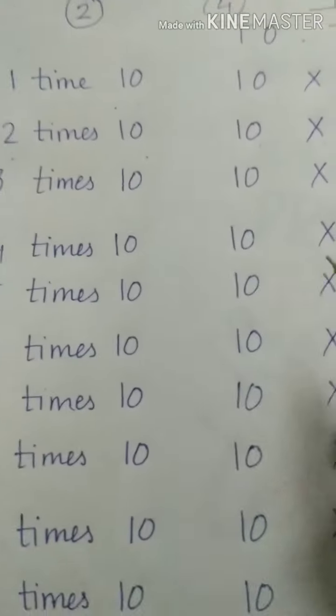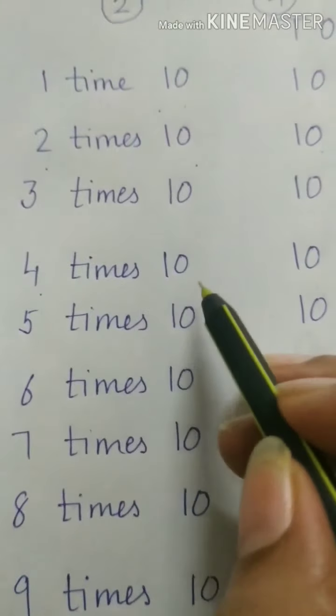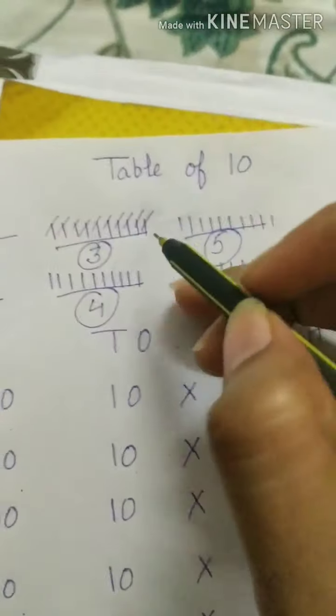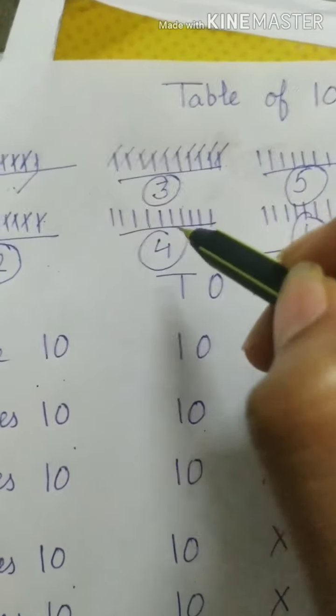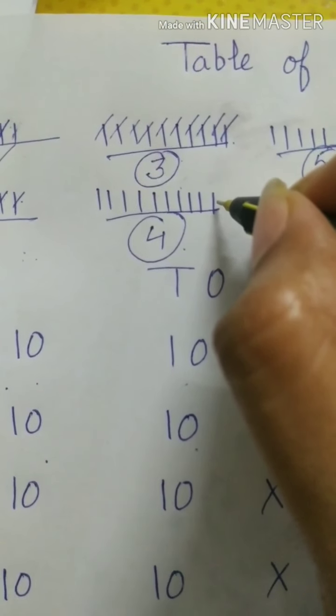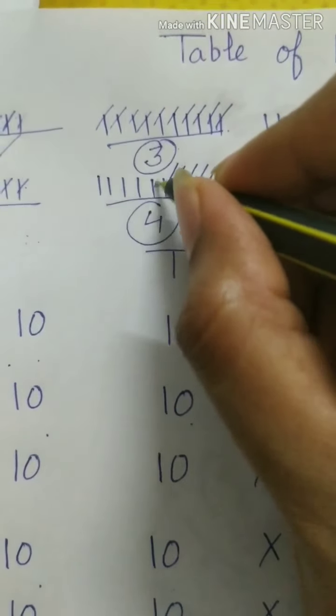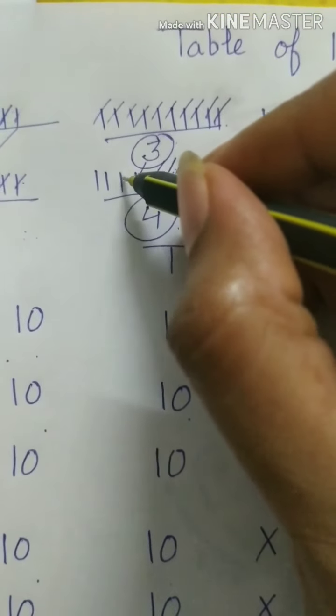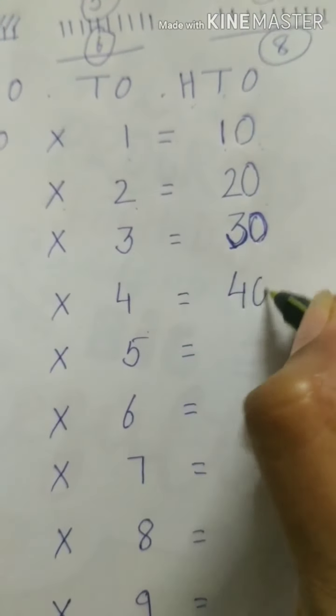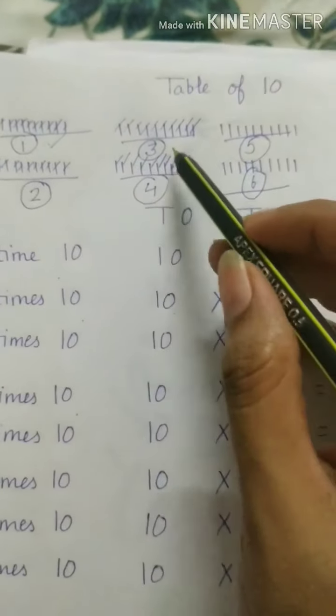Next is 10 fours and here I have written 4 times 10. So what we need to do is after these 30 we will take another set into it and we will start counting forward from 30. 31, 32, 33, 34, 35, 36, 37, 38, 39 and 40. So I got 40.